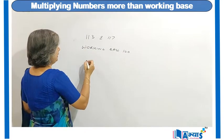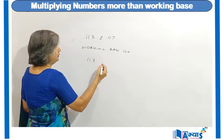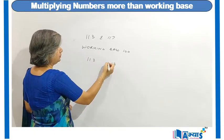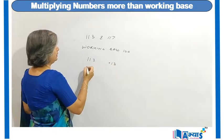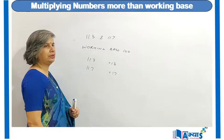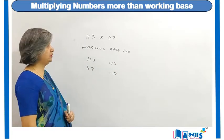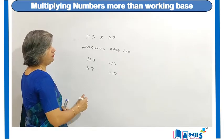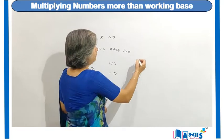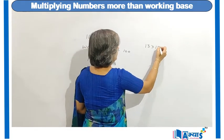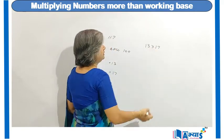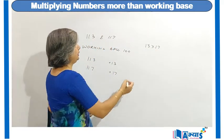To perform multiplication, I will write 113 with plus 13, meaning 113 is 13 more than the base 100. And for 117, it is 17 more than the working base. In the first step, we will multiply 13 with 17, and when I multiply 13 with 17, I get 221.